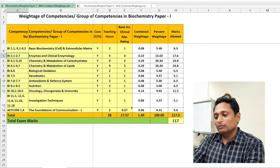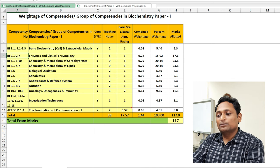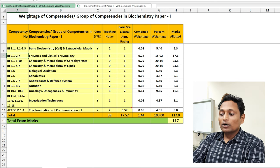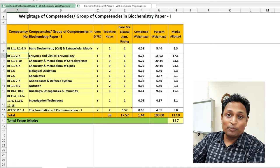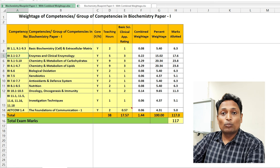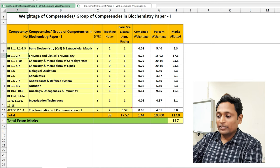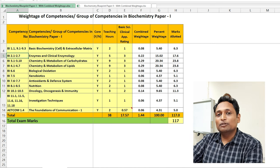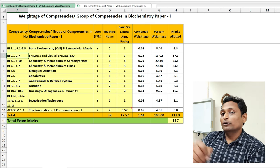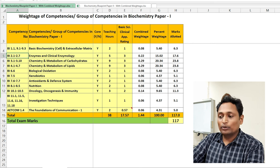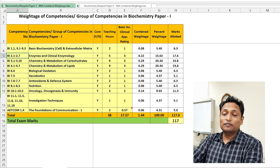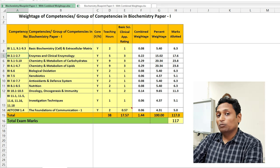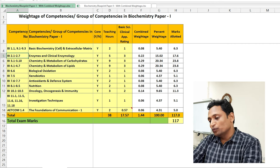Here basic biochemistry cell, extracellular matrix, enzymes and clinical enzymology, chemistry and metabolism of carbohydrates and so on. Including the investigation techniques and foundation of communication that is EDCOMM module is also included because there is one compulsory question on EDCOMM module for 5 marks. That is SAQ, so that has to be included, otherwise it will be skewed and we will have to again go back and give allocation for EDCOMM module. That is already included and the teaching hours through that EDCOMM module along with the teaching hours we have given for investigation techniques is also included.